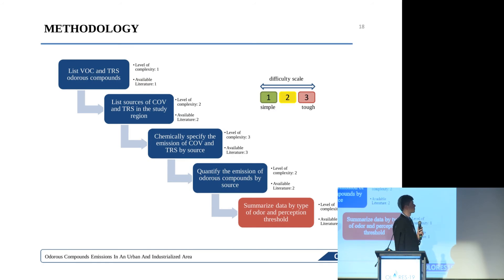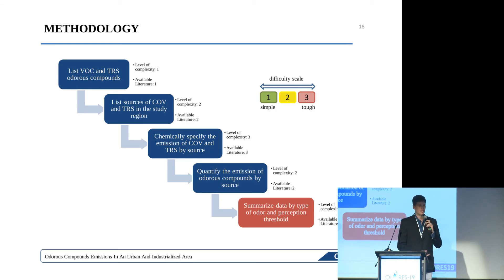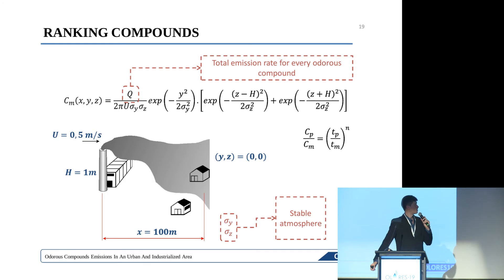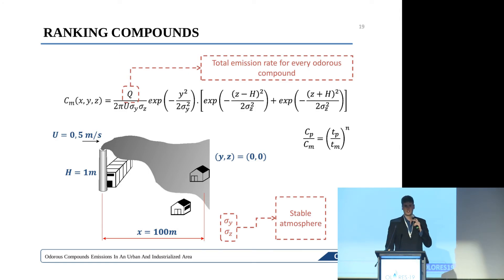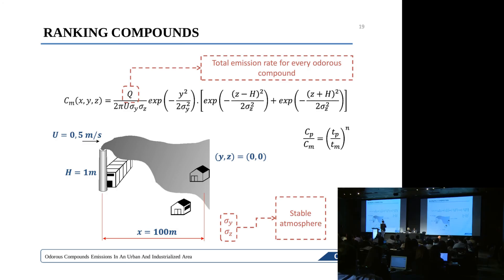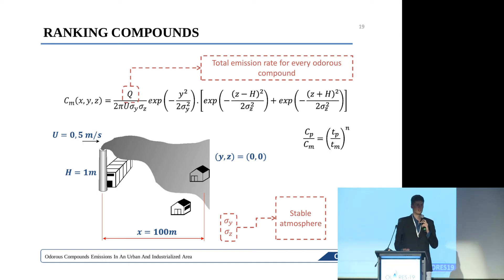Then we quantified the emission of odorous compounds by source. This table shows all the compounds being emitted, their total emission in kilograms per hour, the odor threshold, and the reference source for that data. When I say total emission, it means all sources in the region emitting benzene, toluene, dodecane, and other compounds are summed up to give an idea of how much of each compound is being emitted.